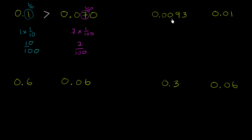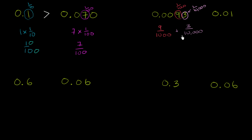So here we have 0.093 and here we have 0.01. This 9 is not in the tenths or the hundredths — it's in the thousandths place. And this 3 is in the ten-thousandths place. So you could literally view 0.093 as 9 thousandths plus 3 ten-thousandths. If you wanted to write it entirely in terms of ten-thousandths, the 9 thousandths becomes 90 ten-thousandths, and adding them together gives you 93 ten-thousandths.